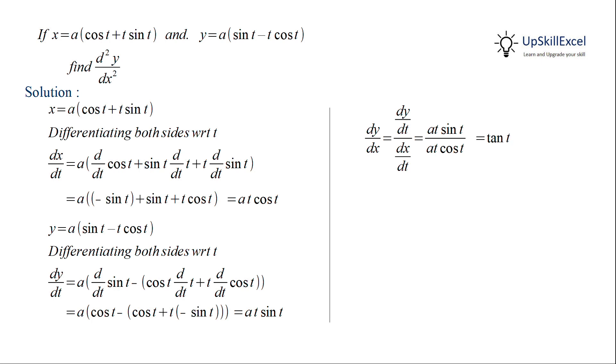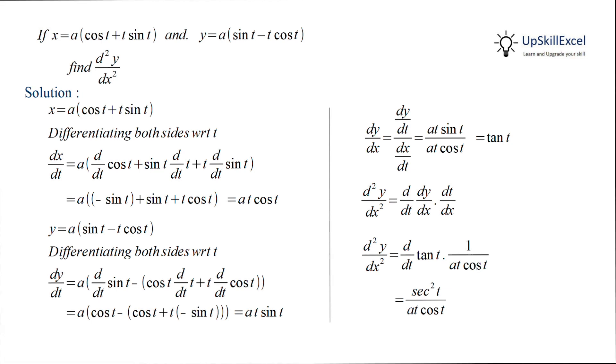Now we can differentiate again with respect to x. But as dy/dx is still in parametric form, we have to first differentiate with respect to t and then multiply by dt/dx. Substituting the values and applying derivative of tan, which equals sec², we get sec² t by at cos t. We can replace cos in the denominator with sec in the numerator, giving us sec³ t by at.